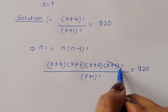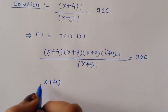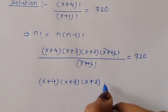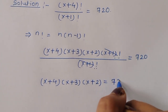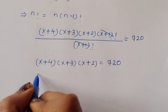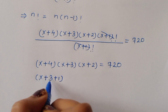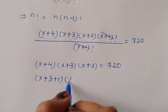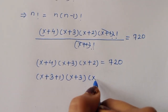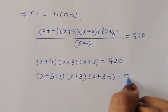We have (x+4)(x+3)(x+2) = 720. We can rewrite x+4 as (x+3)+1, keep x+3 as is, and rewrite x+2 as (x+3)-1. So this becomes (x+3+1)(x+3)(x+3-1) = 720.